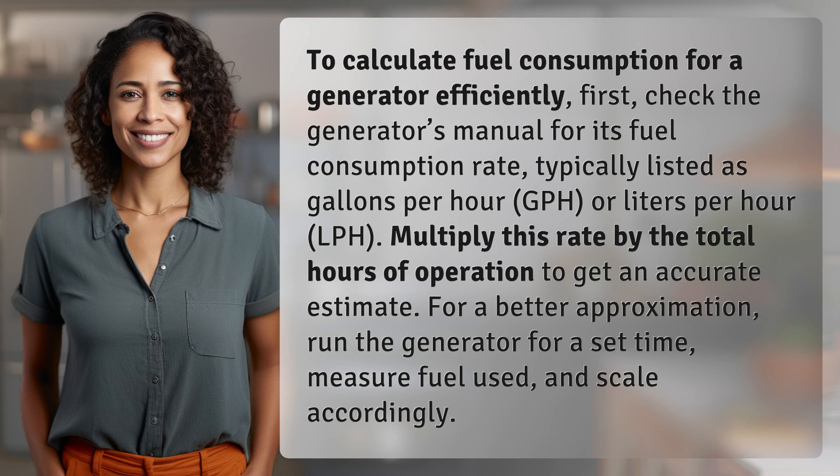To calculate fuel consumption for a generator efficiently, first check the generator's manual for its fuel consumption rate, typically listed as gallons per hour (GPH) or liters per hour (LPH).